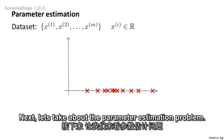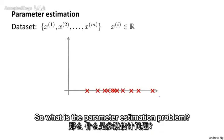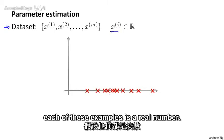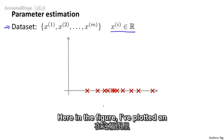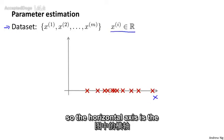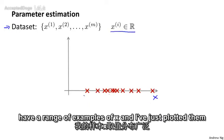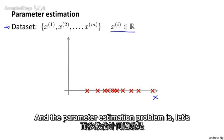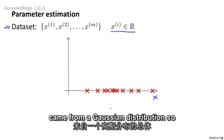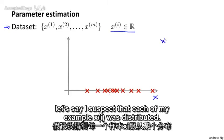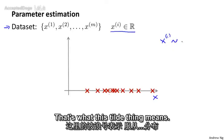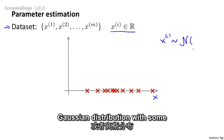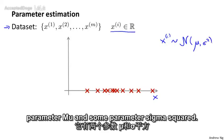Next, let's talk about the parameter estimation problem. Suppose we have a dataset of m examples x1 through xm, each a real number. The parameter estimation problem is: let's say I suspect these examples came from a Gaussian distribution, so each example xi was distributed according to a normal distribution with some parameter mu and some parameter sigma squared.